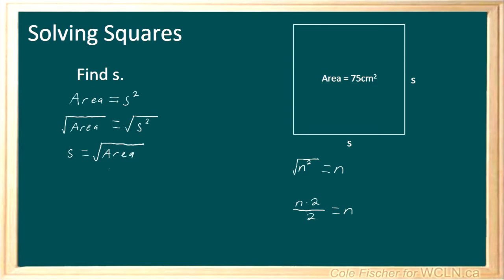Now we can plug in our area of 75 into our equation, so we have S equals the square root of 75. You can plug this into your calculator and you'll get an answer of 8.66 centimeters. Let's have a look at one more example of this.